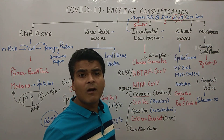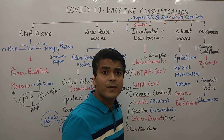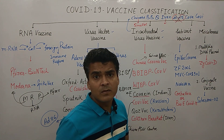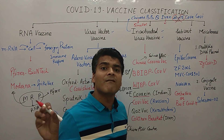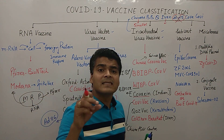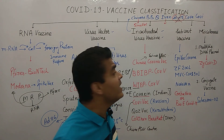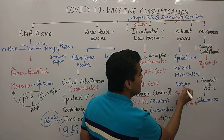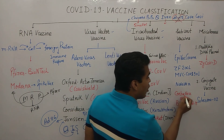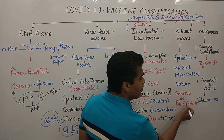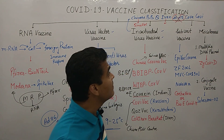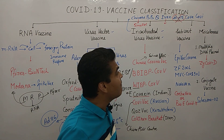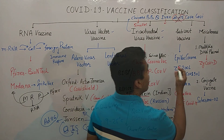Now, moving to subunit vaccines. In subunit vaccines, we do not take the whole coronavirus. Instead, we take only a part of it — such as the spike protein — to develop the vaccine. Examples include EpiVac Corona, ZF-2001, MVC-COV1901, Novavax, and Corbevax (Biological E COVID-19 vaccine).